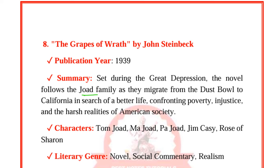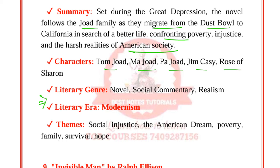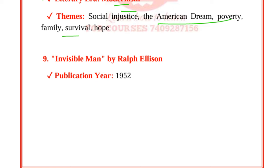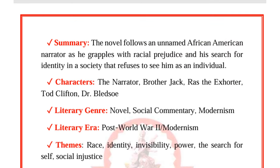Invisible Man by Ralph Ellison was published in 1952. The novel follows an unnamed African-American narrator as he grapples with racial prejudice and his search for identity in a society that refuses to see him as an individual. Characters are the narrator, Brother Jack, Ras the Exhorter, Tod Clifton, and Dr. Bledsoe. The genre is a novel with social commentary. It belongs to the post-World War II modernist era. Themes are race, identity, invisibility, power, search for self, and social injustice.